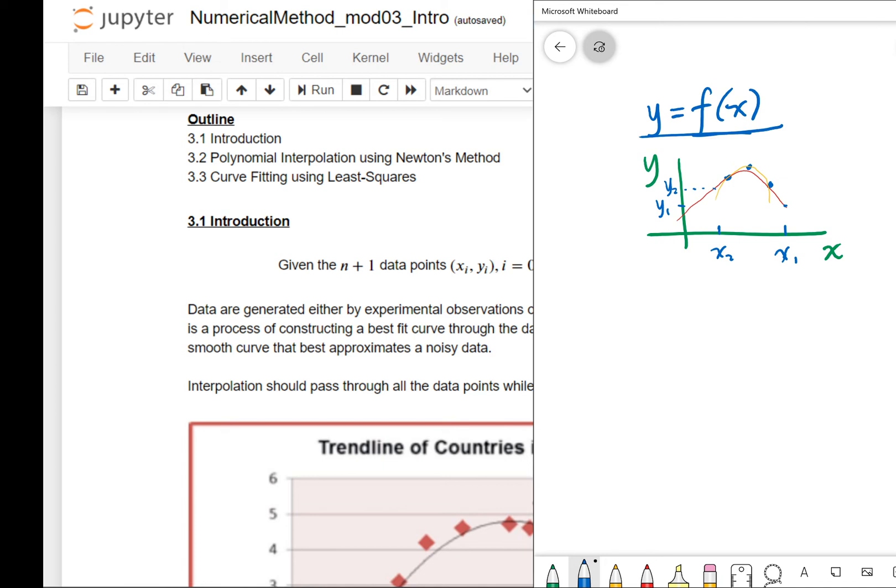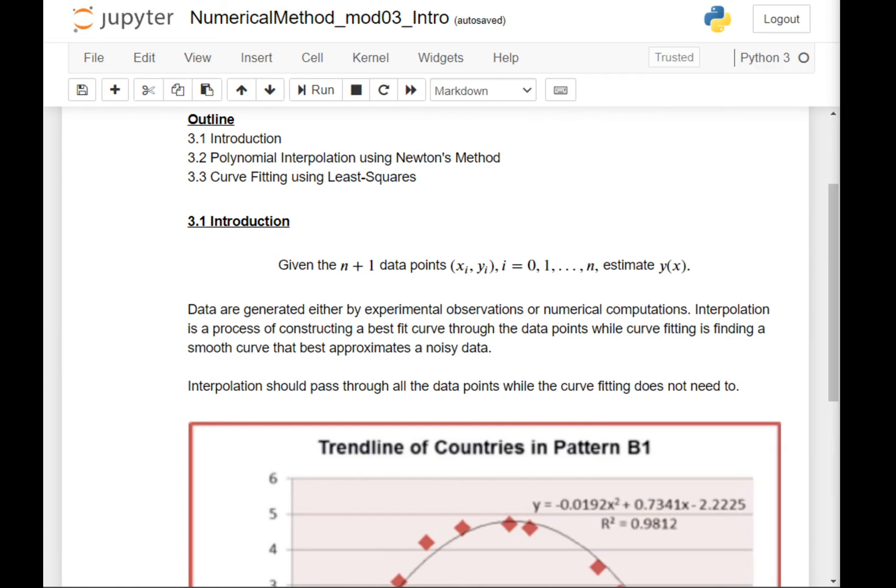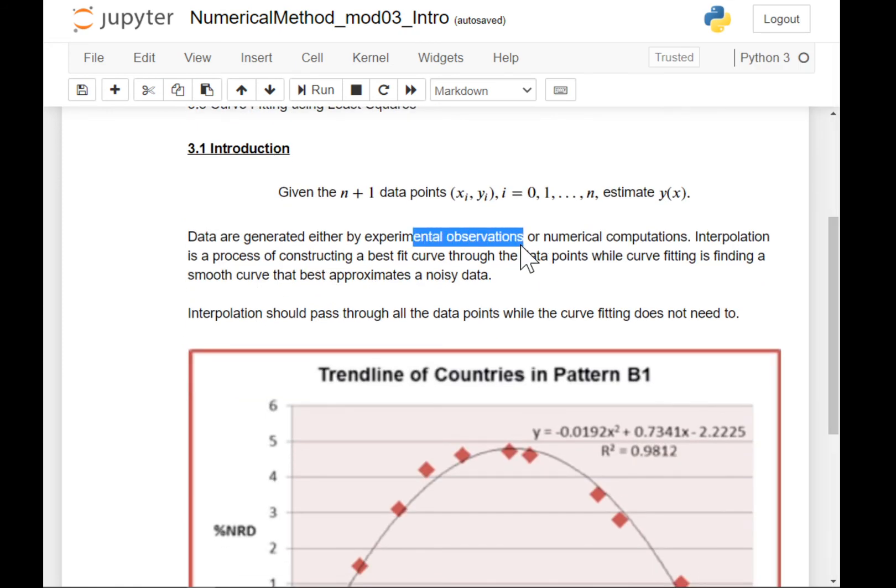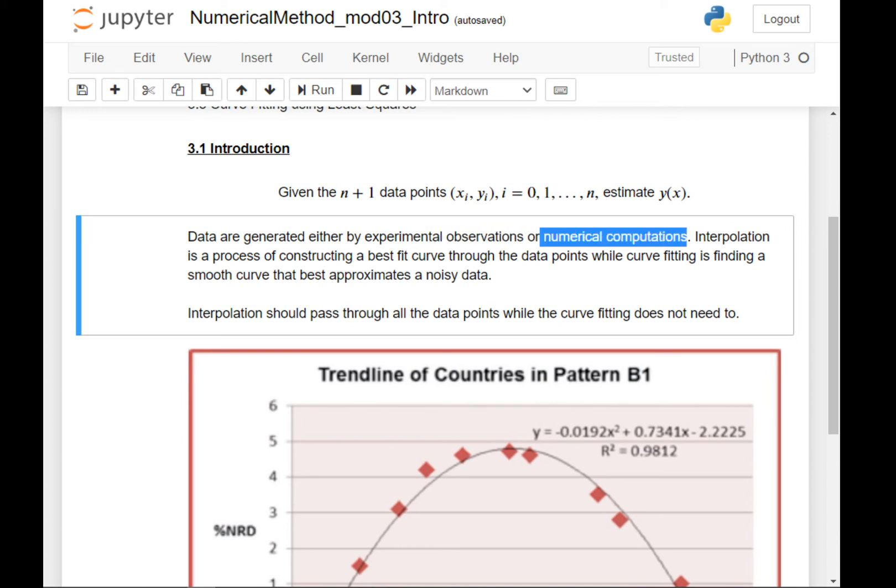Data are generated either by experimental observations or numerical computations. Interpolation is a process of constructing a best fit curve through the data points, while curve fitting is finding a smooth curve that best approximates noisy data. Interpolation should pass through all the data points, while curve fitting does not need to.